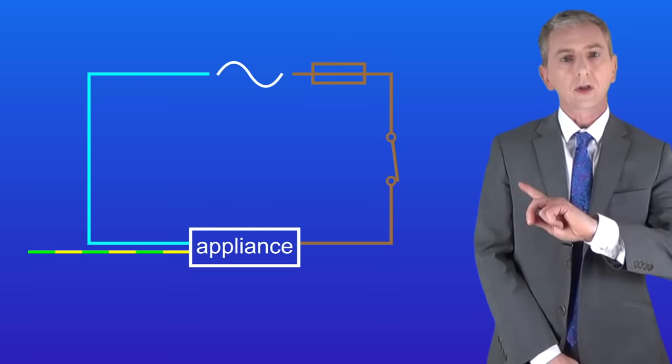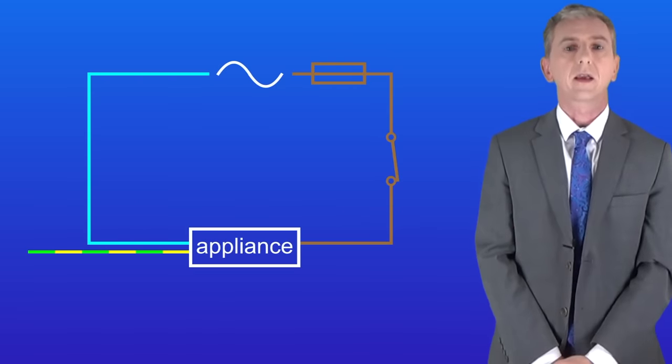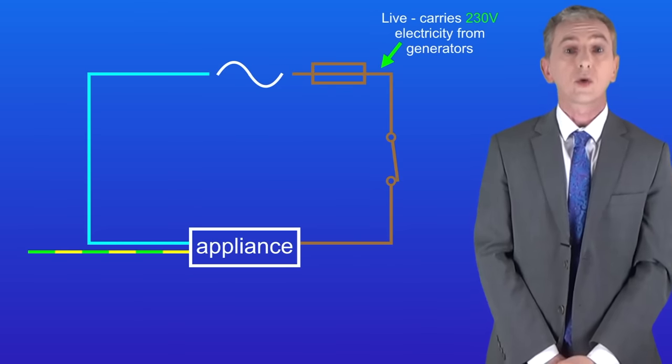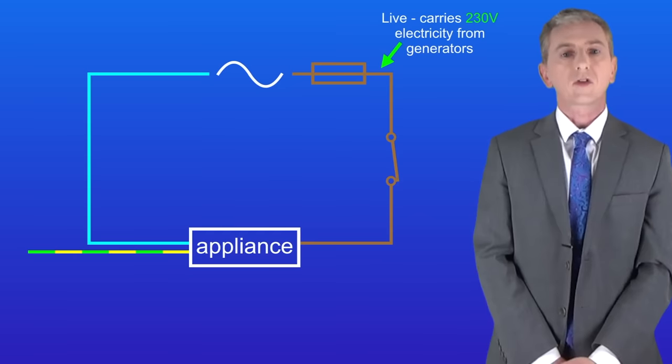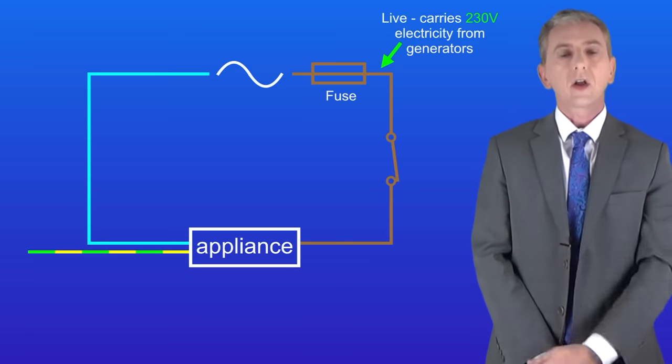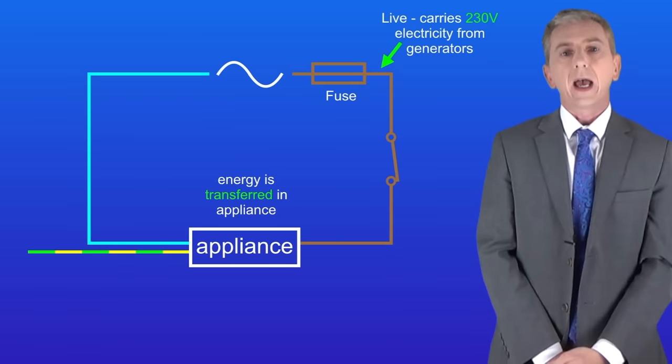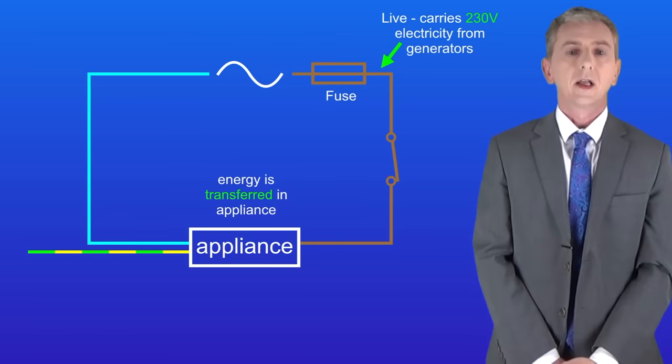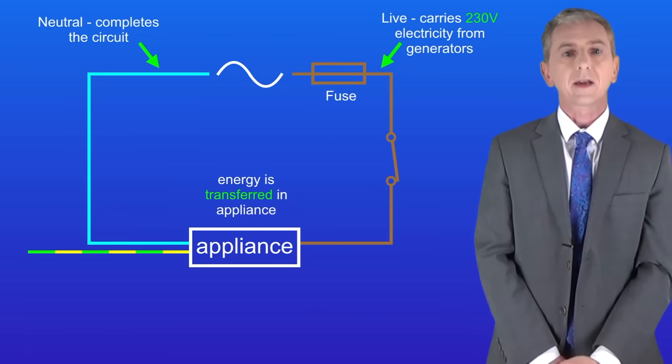I'm showing you here a simple circuit wired to the main supply. So the live wire is carrying electricity with a potential difference of 230 volts from the electricity generators. Remember that the live wire is connected to the fuse and I'm showing you the symbol for a fuse here. You need to learn that symbol. Energy is transferred as the electrical current passes through the appliance. And finally the neutral wire completes the circuit.